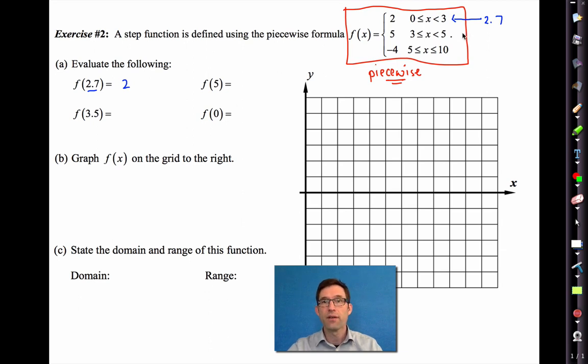3.5 lies in this range. So f of 3.5, the output would be 5. So f of 5, where does 5 lie? Ah, 5 lies in this interval, because of the equality right there. So f of 5 is negative 4. And f of 0. Ah, 0 lies in this range. So that's also going to be 2.